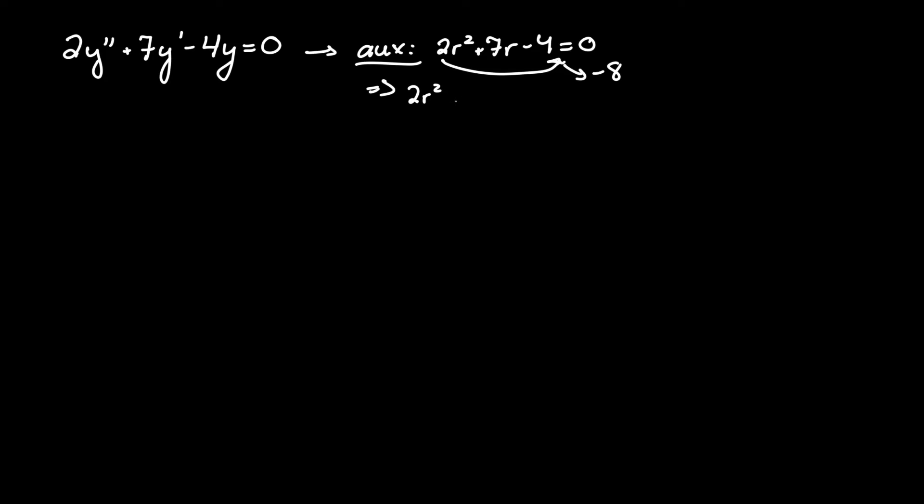So, rewriting this, we have 2r squared plus 8r (we're keeping the r, since that is 7 deconstructed) minus 1r, or just minus r, minus 4 equals 0. That keeps true to this value.